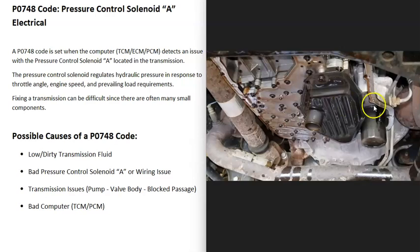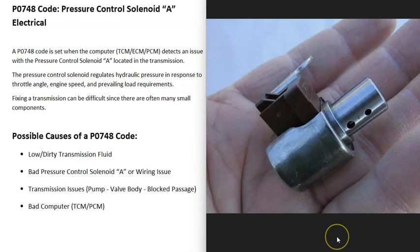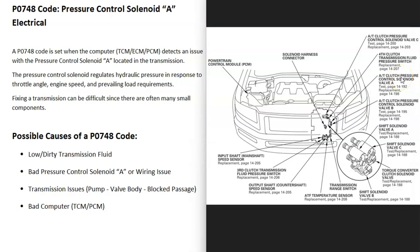The next thing that could cause this is a bad pressure control solenoid A or the wiring going to the solenoid. If there's any problems with the wires going to the solenoid, that's going to have the same symptoms as a bad solenoid. If you do go to work on your transmission, you will need to get a diagram to know where all those solenoids are located, which ones are which.